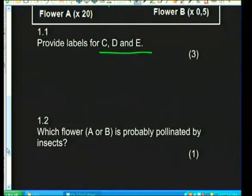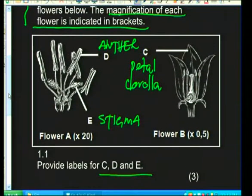Question 1.2: which flower, A or B, is probably pollinated by insects? Your answer must be either A or B. We must look at the structure of A and B. Flower A has no petals or corolla, so it wouldn't be brightly coloured.